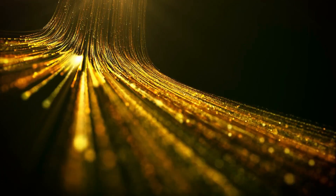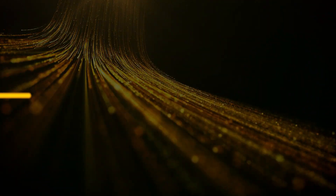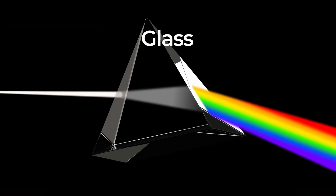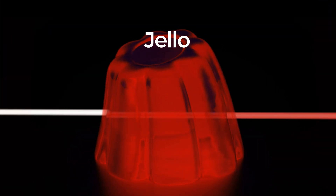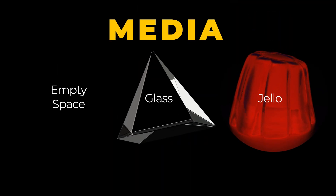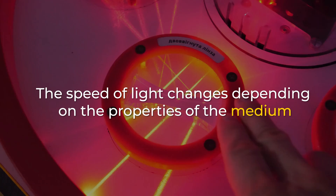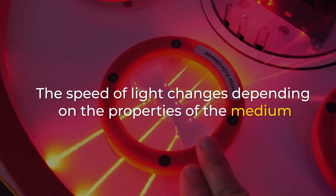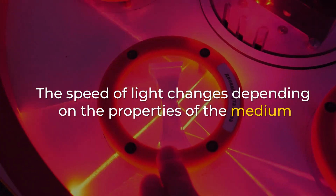Light can travel through anything transparent, whether that's empty space, a piece of glass, or a wiggly block of jello. These transparent materials are examples of media. The speed of light changes depending on the properties of the medium.